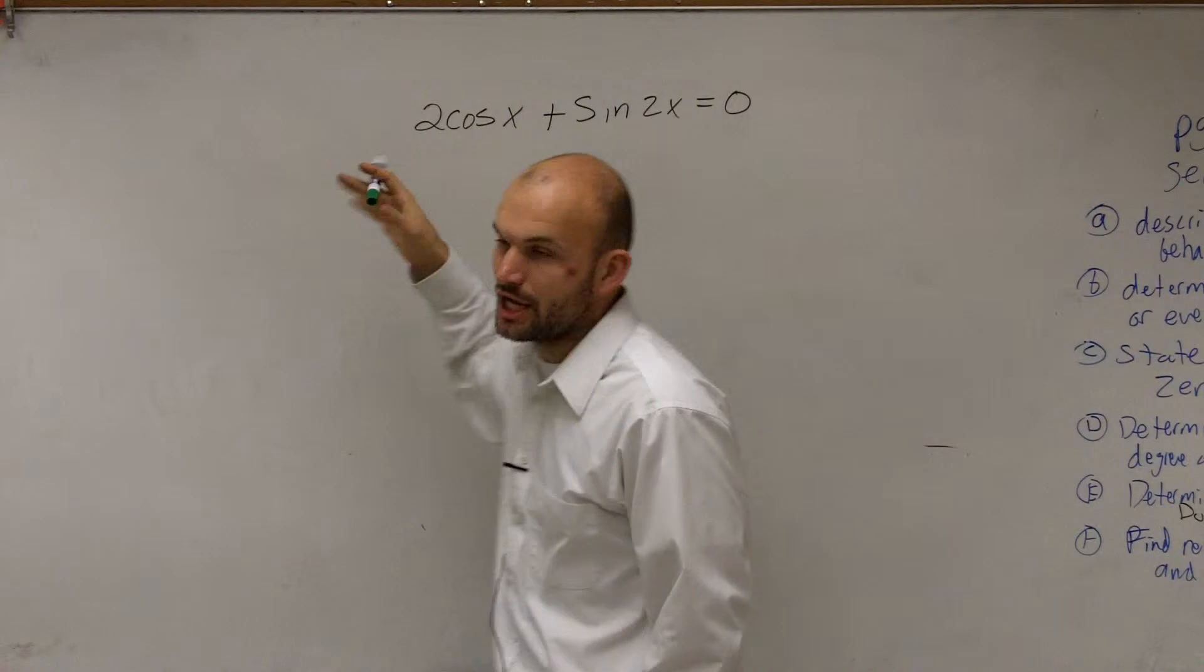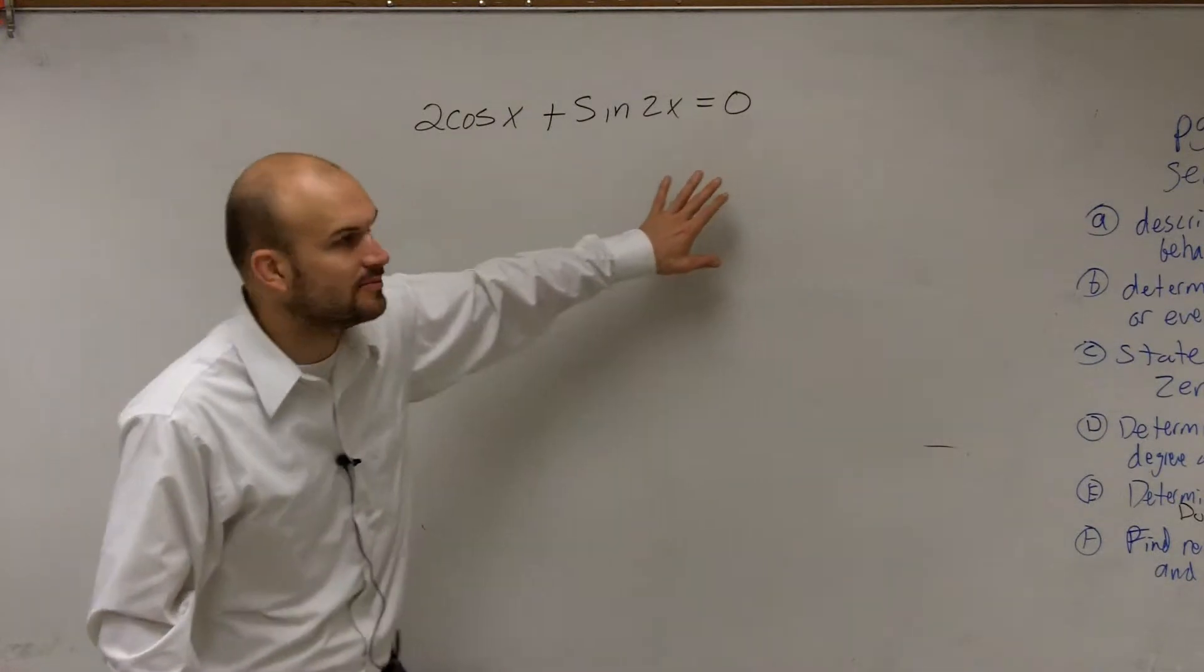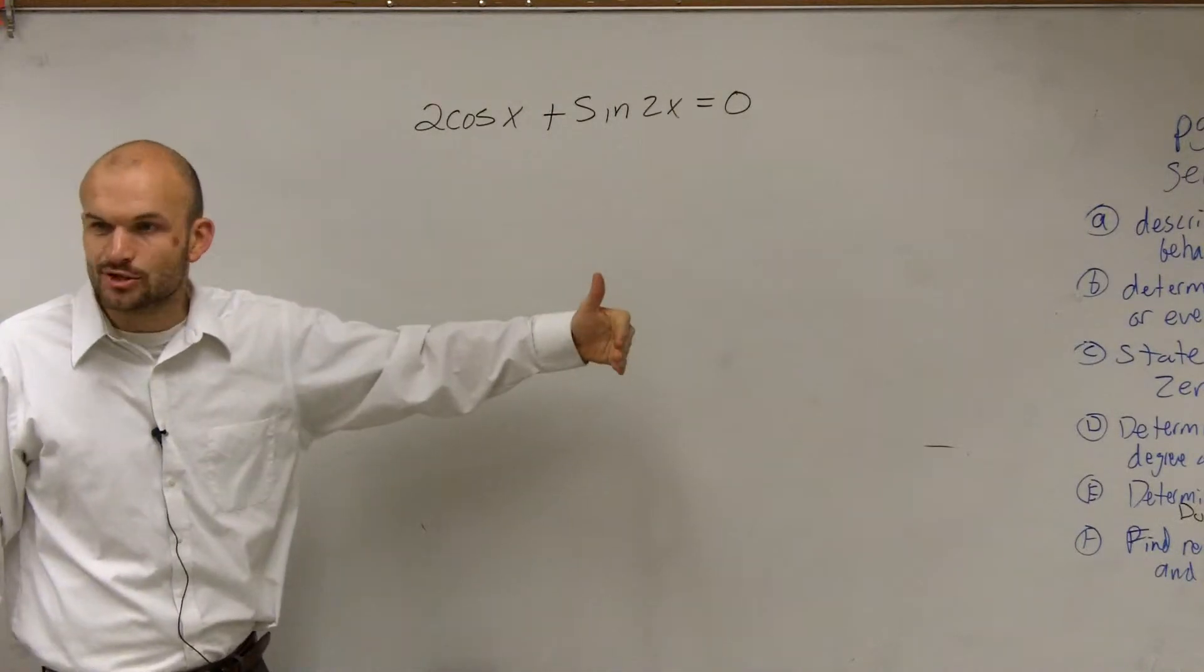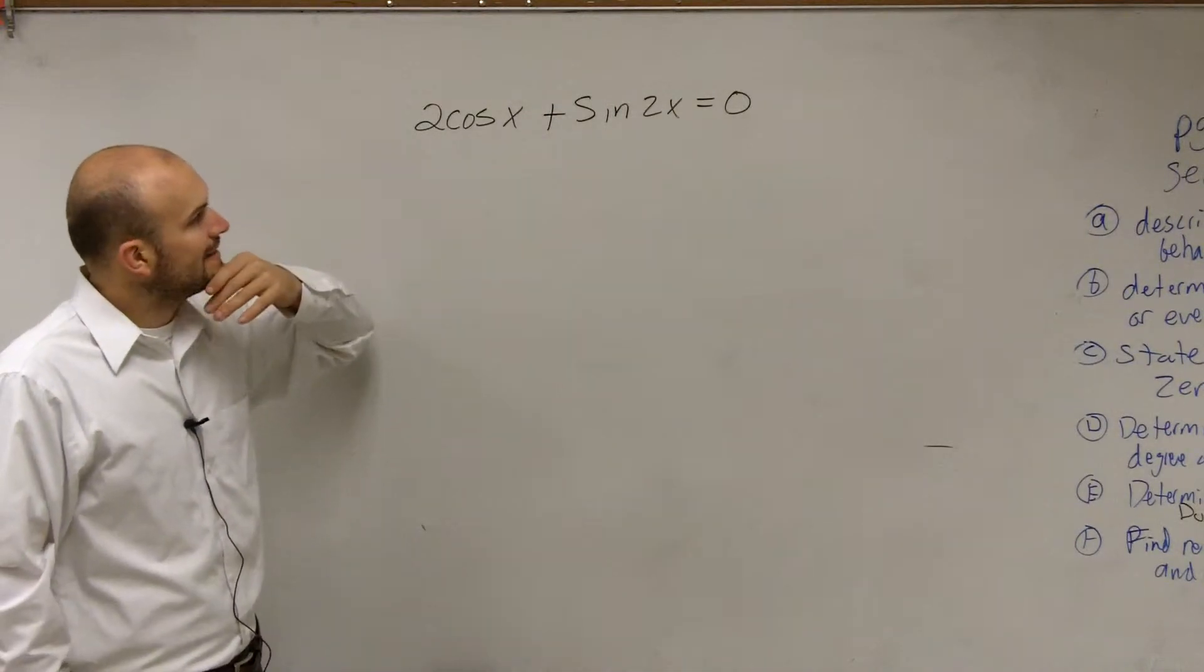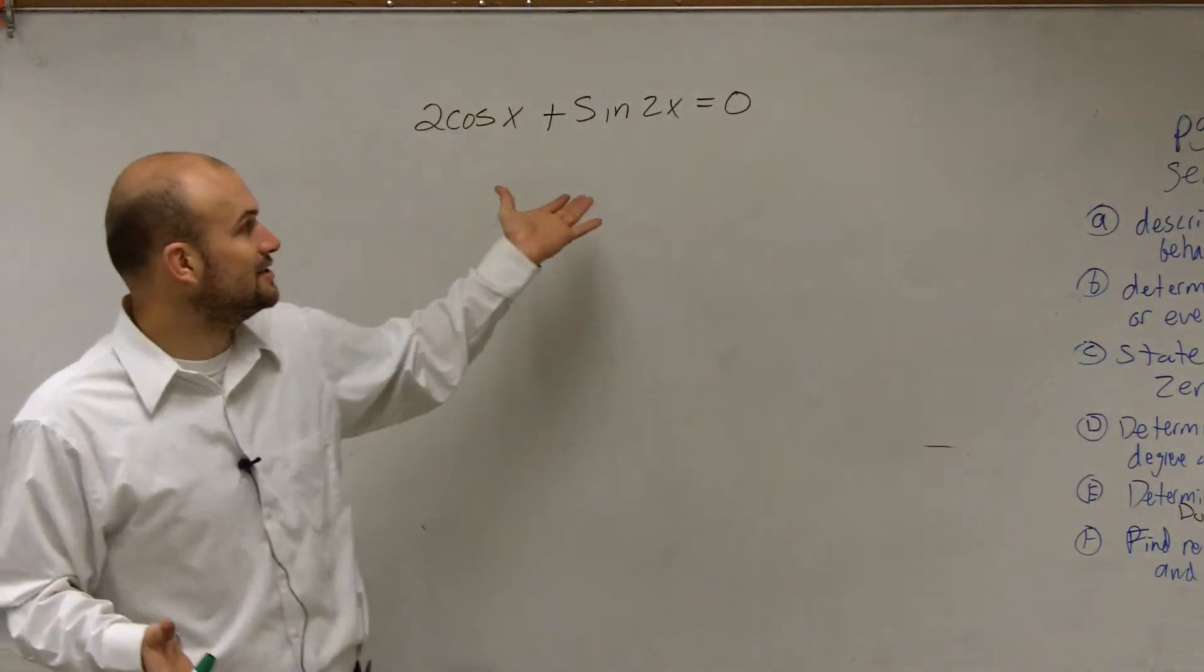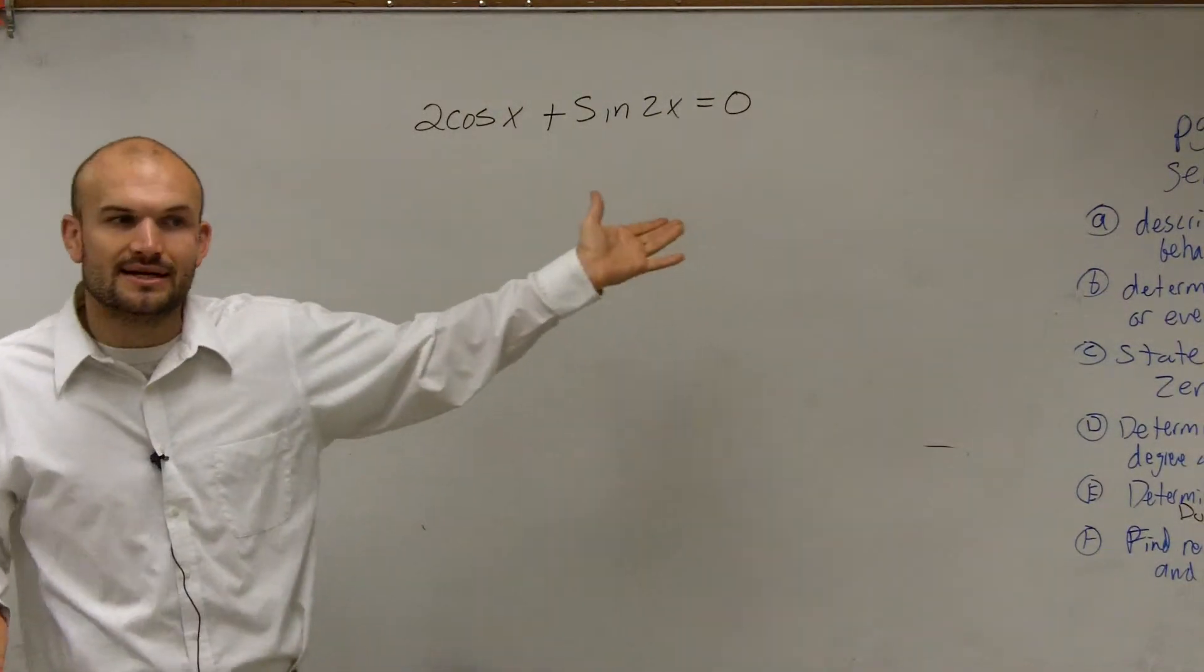So when we have two different functions, we can't isolate one and just kind of forget about the other, but a lot of times we need to somehow get multiplication involved so we could apply the zero product property. And this one's kind of getting a little tough because I'm not seeing any multiplication. The only thing I can do is just add one to the other side, but that's not going to help me solve.